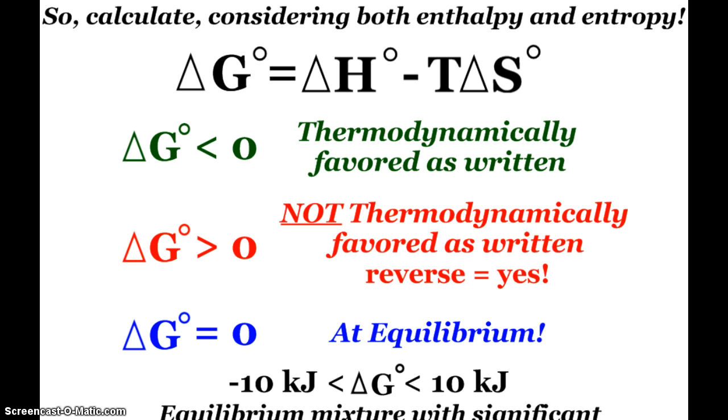Now this slide is exactly like I had a little bit back, but ΔH - TΔS is ΔG. So when ΔH - TΔS was negative, it was thermodynamically favored. Same thing here with ΔG. If it's positive, it's not. And if it's equal to zero, then we have equilibrium.